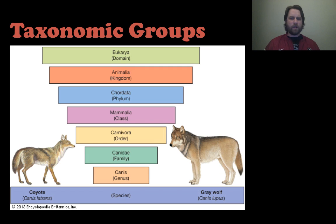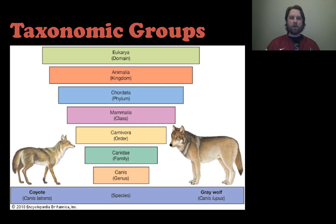For example, we've got the gray wolf on the right and the coyote on the left. These species are different, but only the species part is different. They're both in the domain Eukarya, the animal kingdom, phylum Chordata, class Mammalia, order Carnivora, family Canidae, and genus Canis. The coyote is Canis latrans and the gray wolf is Canis lupus — they have everything in common except the species itself.